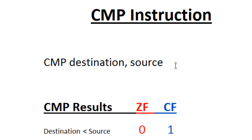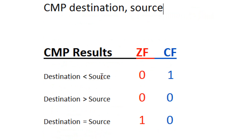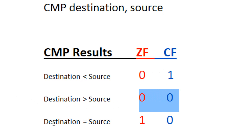We only use the compare instruction with conditional jumps. When combined together, they make the assembly programming language equivalent of an if statement. I'll talk more about conditional jumps in my next class. These are how the flags are affected: if the destination operand is less than the source, the zero flag is zero and the carry flag is one. If the destination is greater than the source, both flags are zero. If they are equal, the zero flag is one and the carry flag is zero.